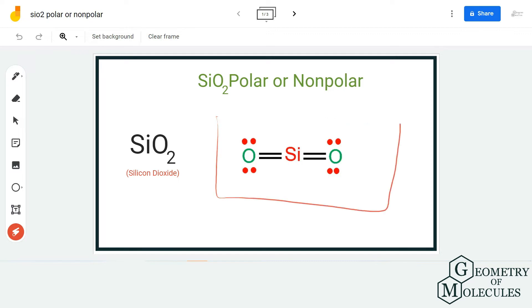Now SiO2 is a quite simple molecule because it is made up of one silicon and two oxygen atoms. A silicon atom forms double bonds with two oxygen atoms, and the molecular geometry is also quite simple because it is linear.